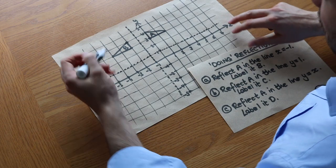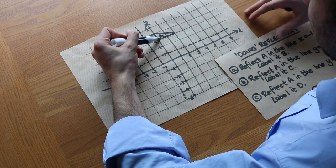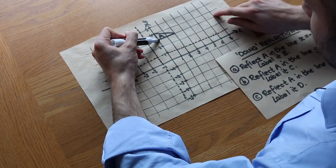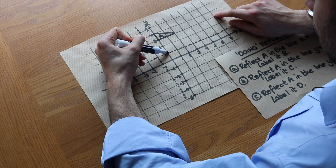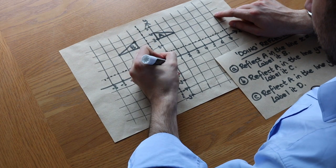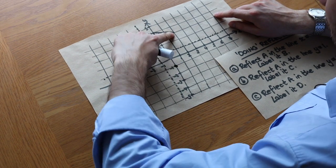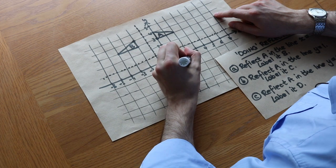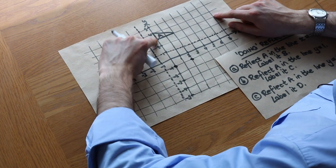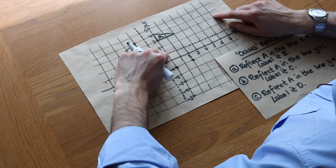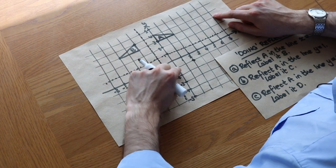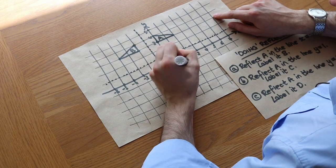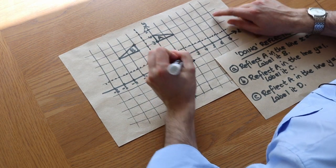We draw that line and now do the same thing. Looking at shape A: this point — going towards the line of reflection, one two squares, then one two squares again, ends up here. This next point: one two to the line, one two again, ends up here. And this point towards the line of reflection: one two three, then one two three again, we end up here. We join those up and get shape C.